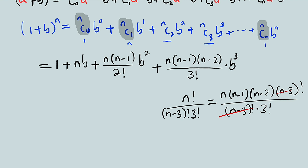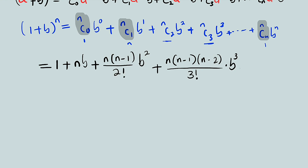Observe something here: as our factor contains (n minus 1) we have 2 factorial, and with 2 factorial we have b to the power of 2. With 3 factorial we have b to the power of 3 and we have (n minus 2). So the next term will be n(n-1)(n-2)(n-3) divided by 4 factorial times b to the power of 4. That's the logic — if we keep adding we obtain the last term which is just b to the power of n.